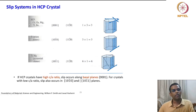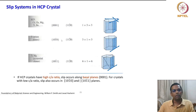Examples of this basal slip system exist in cadmium, zinc, magnesium, titanium, and beryllium. Another HCP slip system uses {1 0 1̄ 0} prism planes and ⟨11 2̄ 0⟩ direction — 3 planes and 1 direction, giving 3 slip systems. Titanium and magnesium also show slip on pyramidal planes.